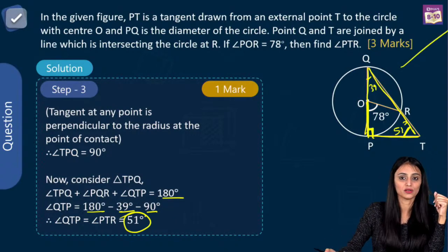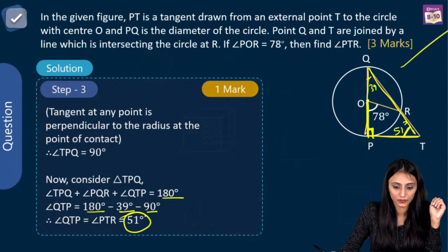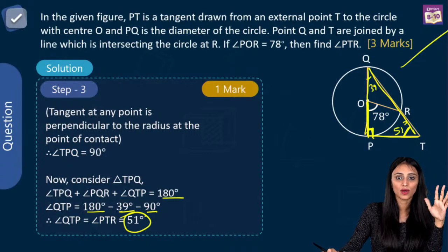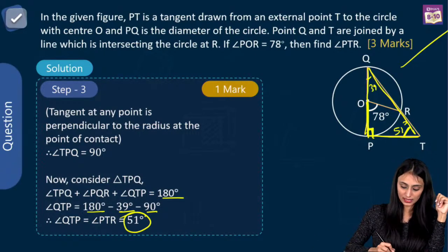Since it's a subjective paper, you will be writing everything. Maximum it will take three to four minutes — not more than that. There are multiple ways to solve a question. For example, you can use the theorem: angle subtended by an arc at the center is double the angle subtended by it at any point on the remaining circle. That gives angle OQR as half of 78, which is 39 degrees. You don't have to follow just one method.